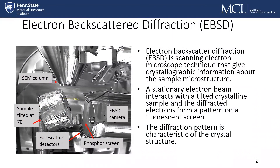Electron backscatter diffraction is a scanning electron microscope technique that gives crystallographic information about the sample microstructure. A stationary electron beam interacts with a tilted crystalline sample and the diffracted electrons form a pattern on the fluorescent screen. The diffraction pattern is characteristic of the crystal structure.